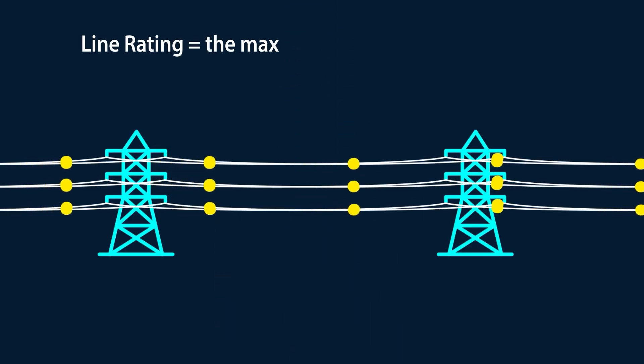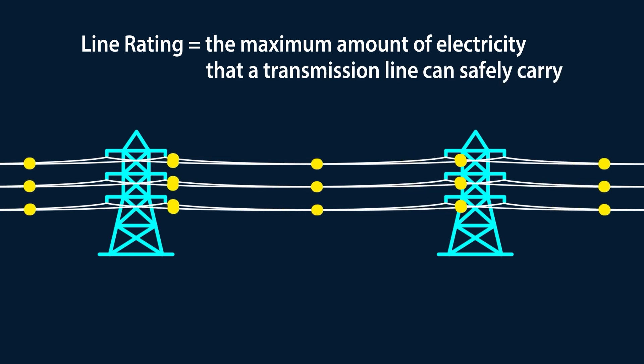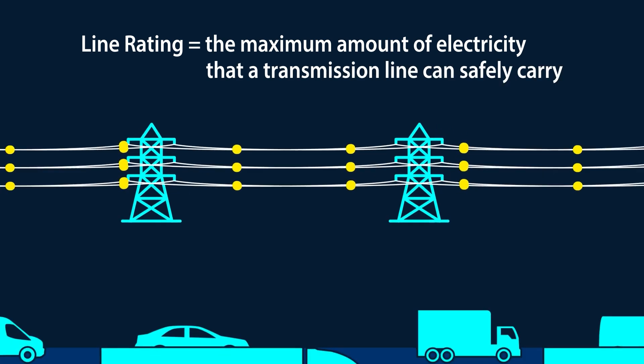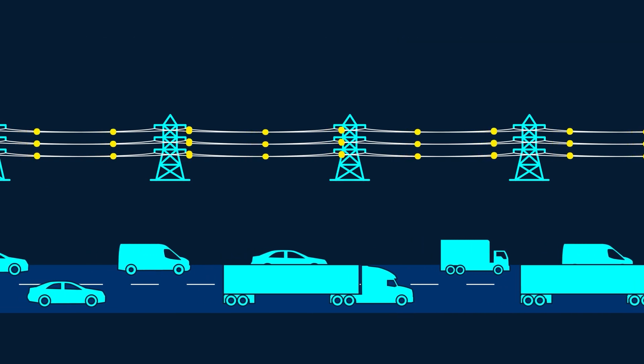Option one is to change the way we operate transmission using dynamic line ratings. A line rating is the maximum amount of electricity that a transmission line can safely carry. Think of it like the maximum speed a driver can go.